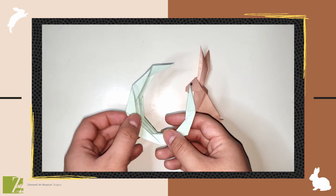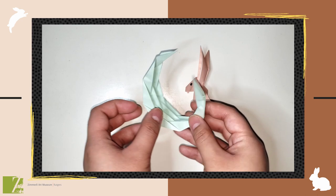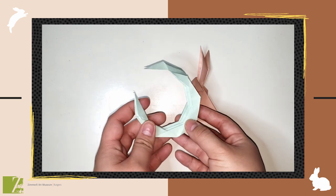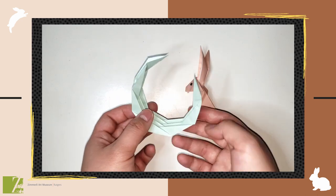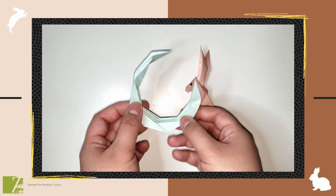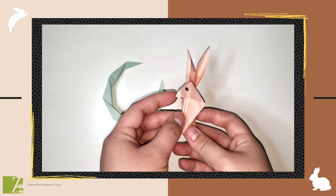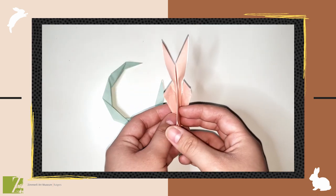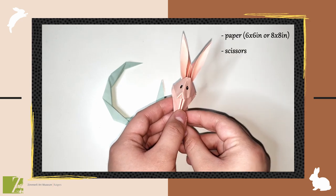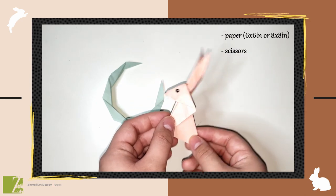Hello everyone! In recognition of the Zimmerli Art Museum's virtual art exhibition, Musings by Moonlight: The Moon from Japanese Art to Japanism, I'm going to teach you how to make a waning moon and traditional rabbit in origami. All you're going to need is paper of either of these sizes and scissors.